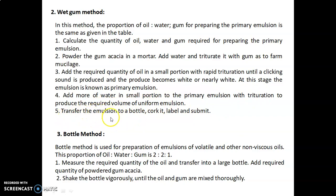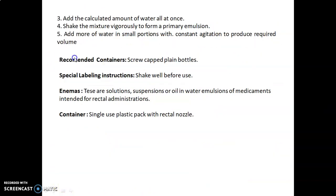Transfer the emulsion to a bottle, cork it, label, and submit. The third method is the bottle method, used for volatile and other non-viscous oils. The proportion of oil to water to gum is 2:2:1. Measure the oil and transfer into a large bottle, add the required quantity of powdered gum acacia, then shake vigorously until oil and gum are thoroughly mixed. Add the calculated amount of water all at once, shake vigorously to form a primary emulsion, then add more water in small portions with constant agitation to produce the required volume. The recommended container is a screw-capped plain bottle; special labeling instruction: shake well before use.